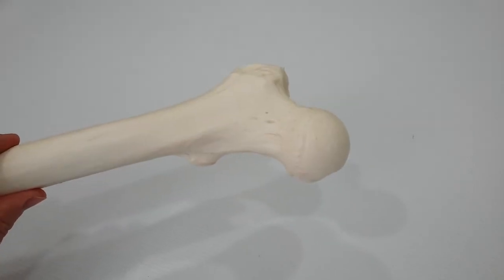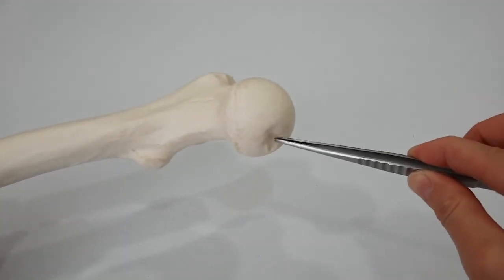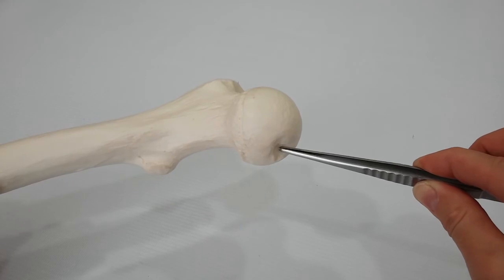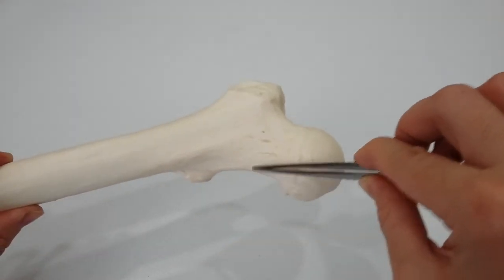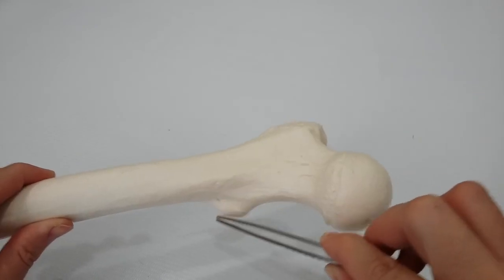Now let's review the main structures again. The head of the femur, the fovea capitis, neck, greater trochanter, lesser trochanter.